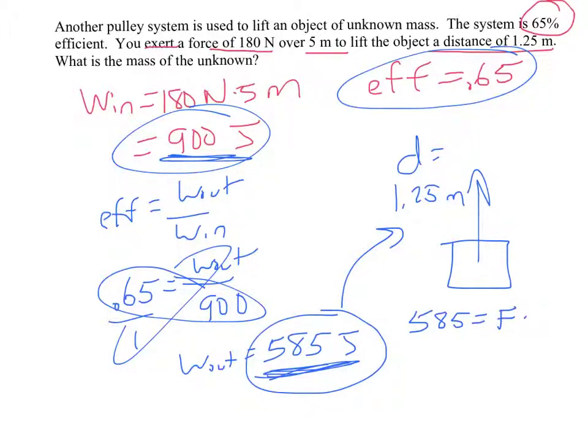So we know the work and we know the distance, so we can figure out the force. So 585 equals the force, which is unknown, times the distance, 1.25. Solving for the force, we get that must be a force of 468 newtons are lifting this box.